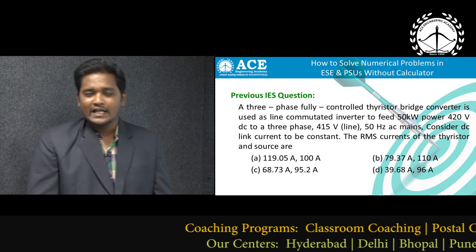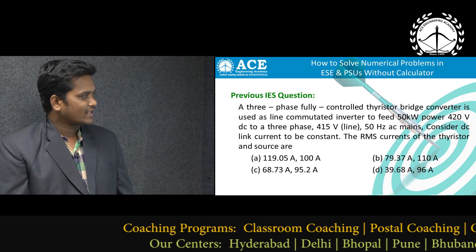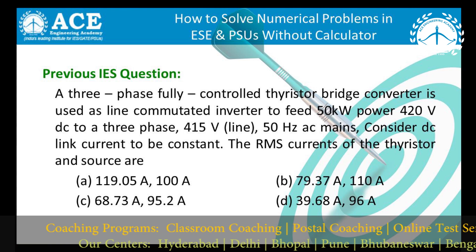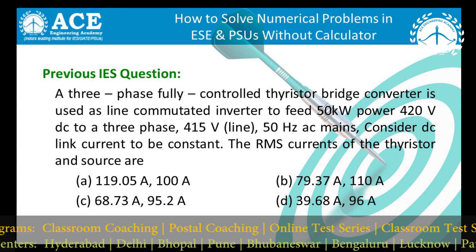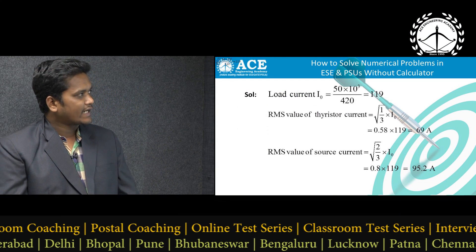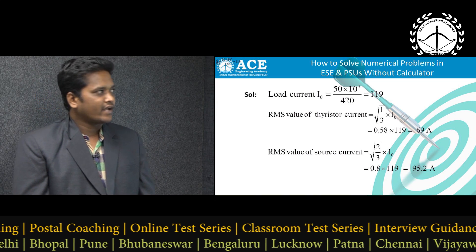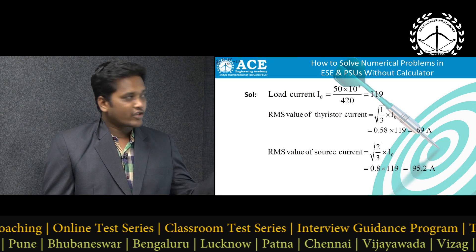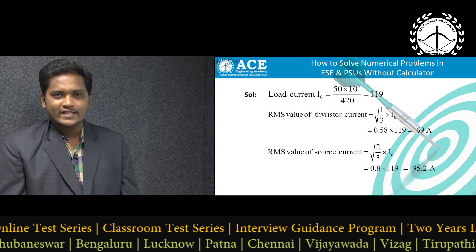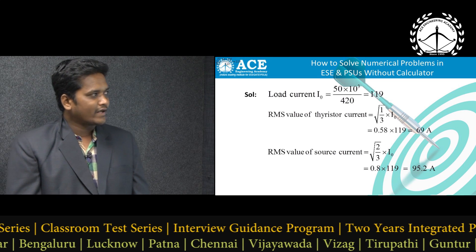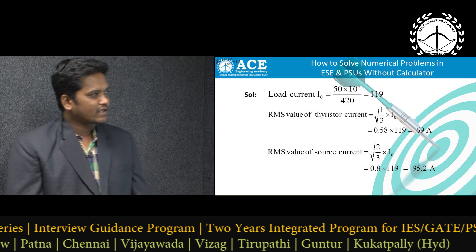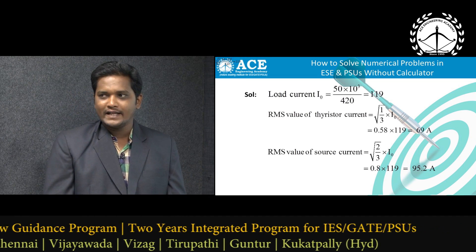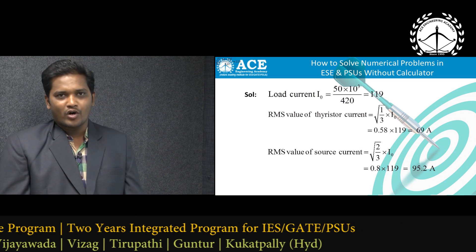Next is a previous IES question asking for RMS currents of thyristor and source. Load current I₀ = Power/Voltage = 50 kW / 420 V = 50 × 10³ / 420 ≈ 119 A. RMS value of thyristor current = √(1/3) × I₀ = 0.58 × 119 = 58% of 119 ≈ 69 A. RMS value of source current = √(2/3) × I₀ = 0.8 × 119 = 80% of 119 = 95.2 A.